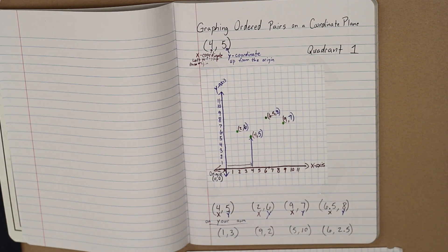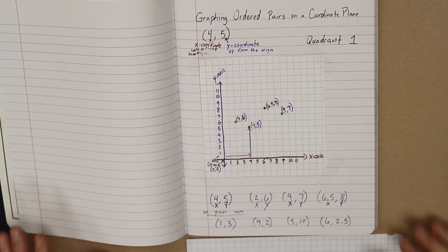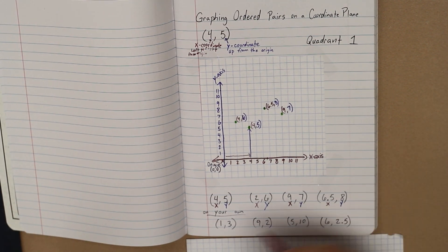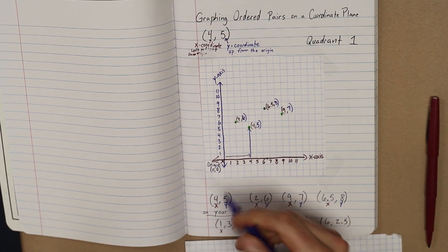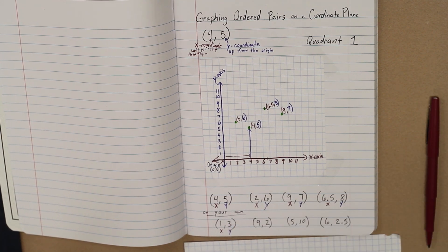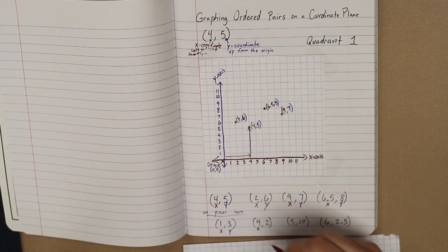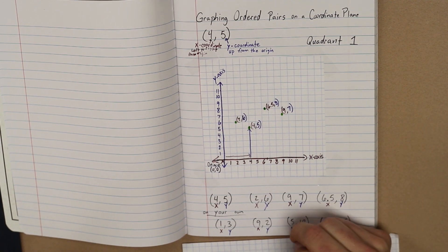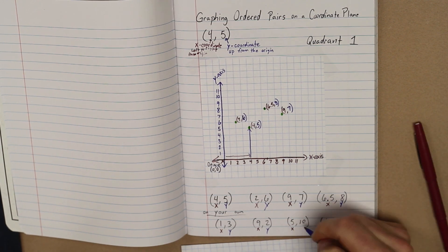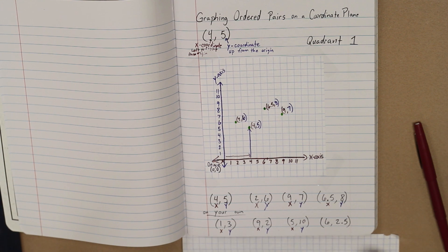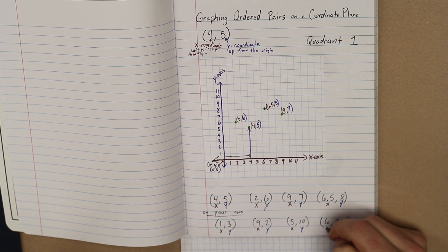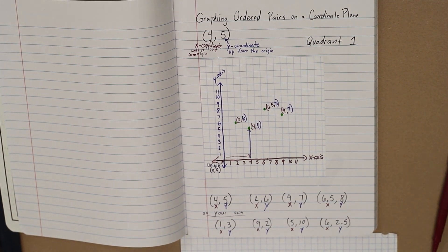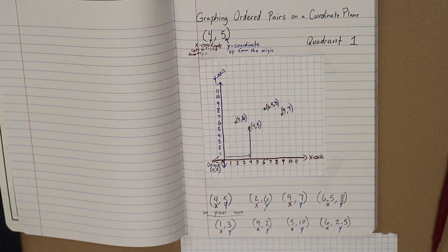I have a few that I would like for you to solve on your own. The first one is 1, 3. Second is 9, 2. Third, 5, 10. And fourth, 6 and 2.5. I think you can do those. Have those ready to go over with your teacher. You are awesome. Way to go. High five.